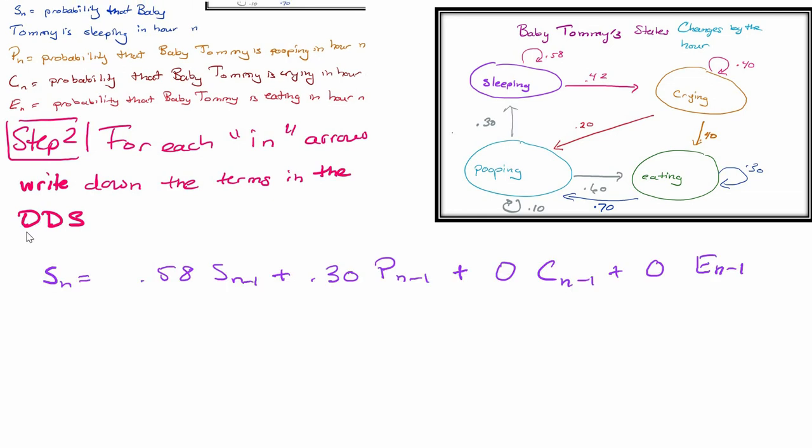If I look at Sn, this pod right here, the probability that from the previous state I remain in Sn is 0.58. So 0.58 times Sn minus 1 tells me the probability of being in state Sn again. I could also come in from pooping - 0.30% chance that the pooping state ends up in the sleeping state. So 0.30 times Pn minus 1 would also be included. I'm only looking at the in arrows, not the exit arrows. This little loop here accounts for things that are leaving.